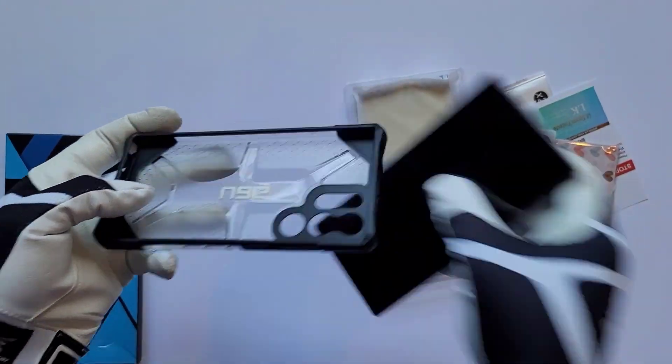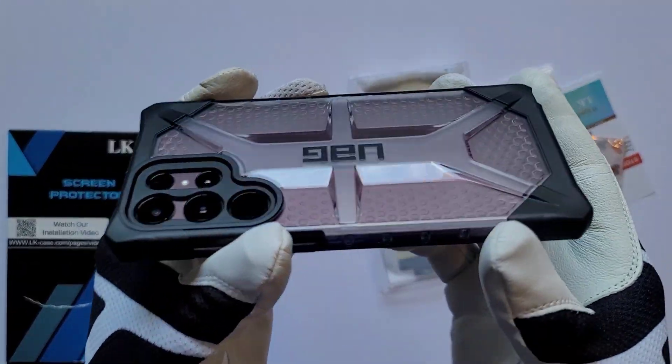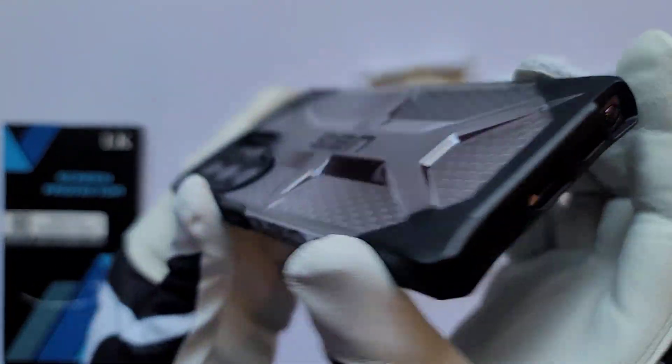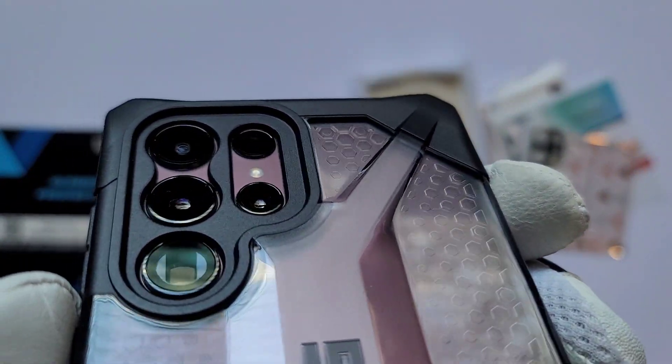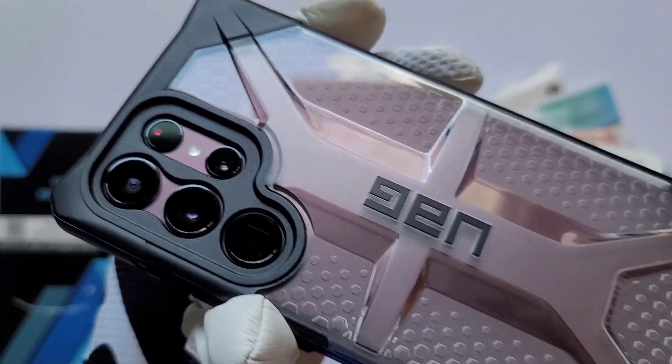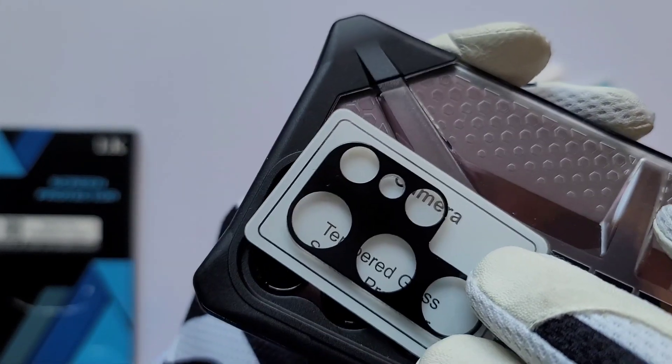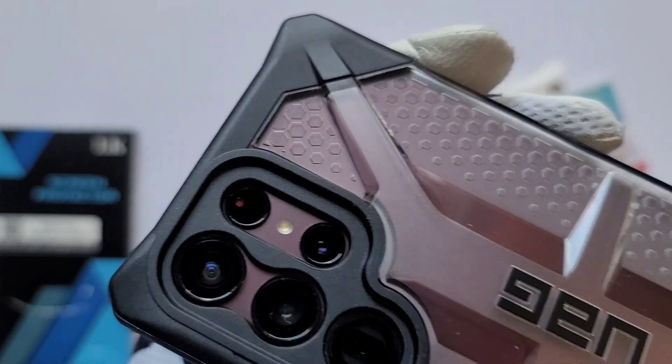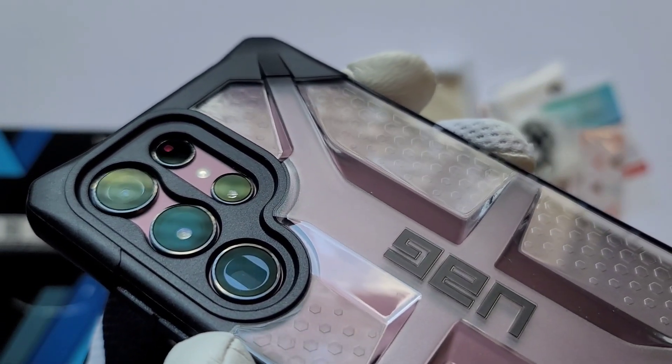In front of you is the Samsung Galaxy S22 Ultra UAG Plasma Ice case. This is one of the best cases available out there. When you take a good look at the camera grill, you can see that each camera is protected individually, meaning I will not be able to use this tempered glass lens protector. I will keep it for the future though, but for right now I'm not going to put it on the phone.